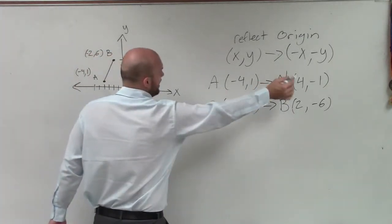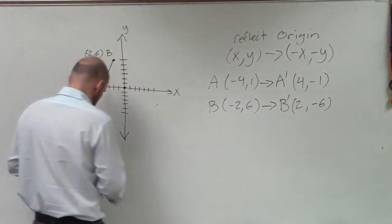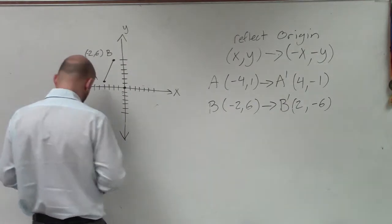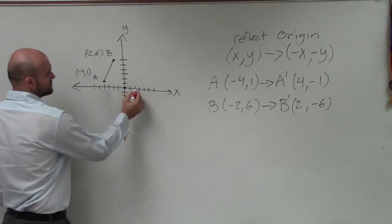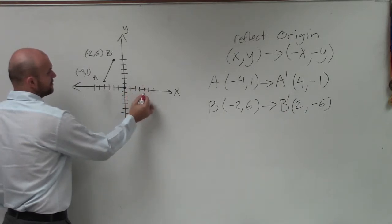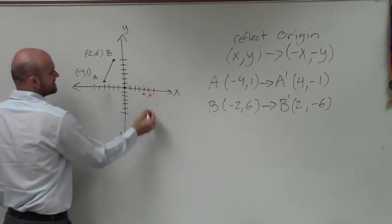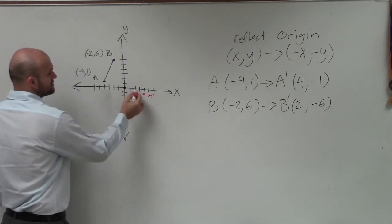So now we just graph A prime and B prime. Although I want to pick a new color. I guess I'll do red again. So A prime is 4, down 1. That's A prime. And then B prime is 2, down negative 6.